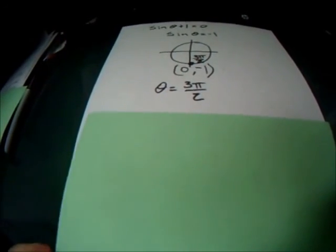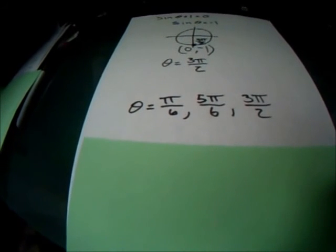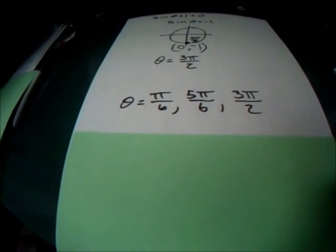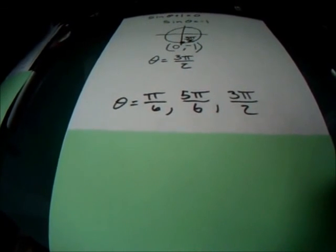Now we combine the answers from the two portions that we have, and our complete answer for this problem is theta equals pi over 6, 5 pi over 6, and 3 pi over 2.